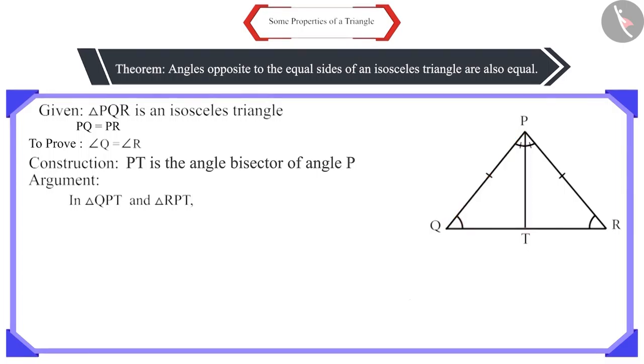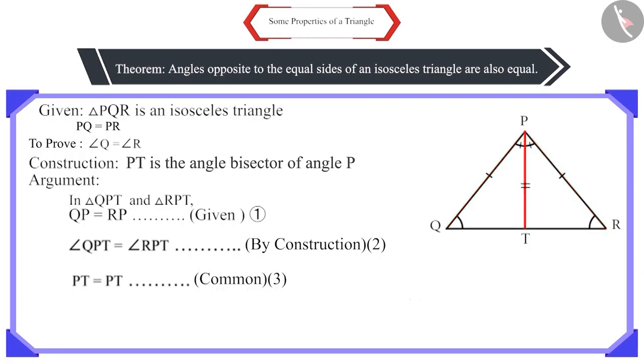Now, look at triangles QPT and RPT. It is given that side QP and side RP are equal. By construction, PT is the bisector of angle QPR. Therefore, angle QPT and angle RPT will be equal. And side PT is the common side for both the triangles.